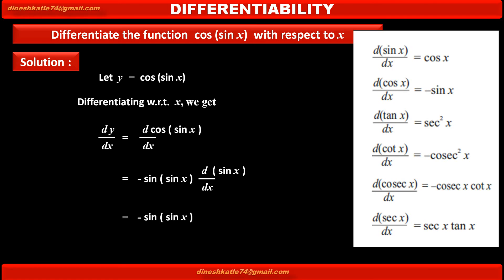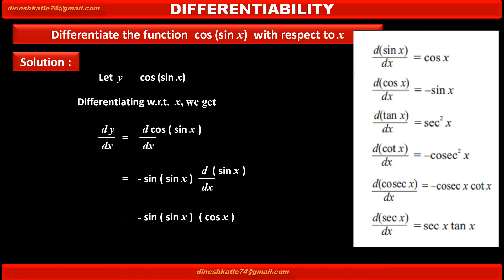By using the formula, derivative of sin x is equal to cos x, we get, by rearranging terms properly, the result is minus sin of sin x into cos x. This is the derivative of the given function cos of sin x with respect to x.